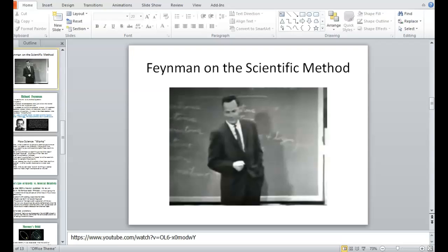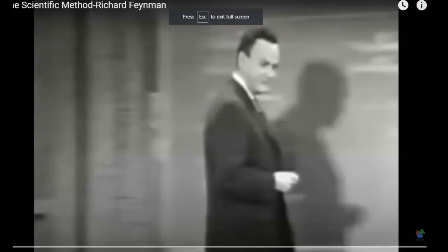Now we're going to watch a short video clip from Richard Feynman, one of my favorite physicists of all time. He won the Nobel Prize for physics in the 1960s. If you're in IB Physics 2, you know about Feynman diagrams — that's something he came up with. This is a short clip about him talking about the scientific method, speaking to students at Cornell University.